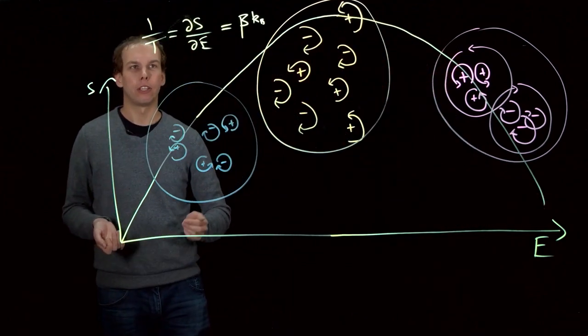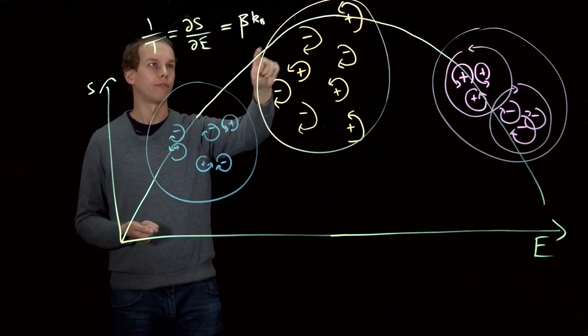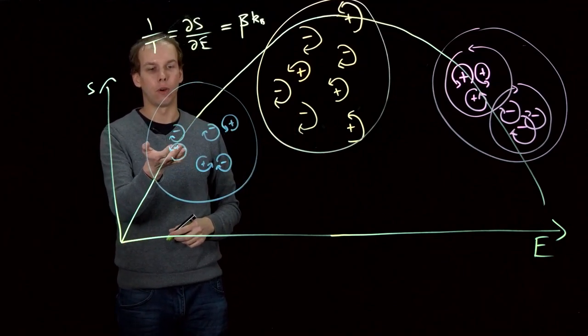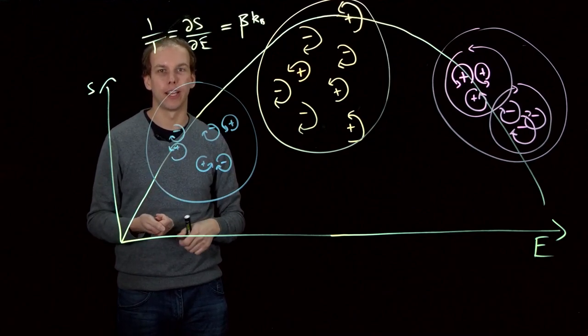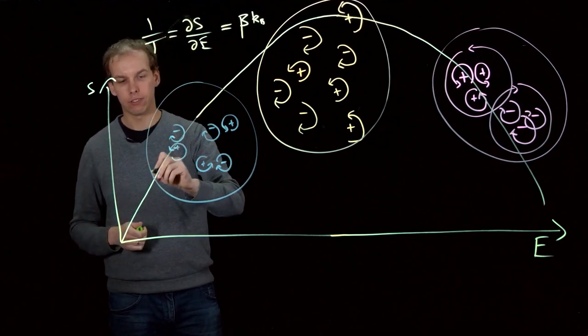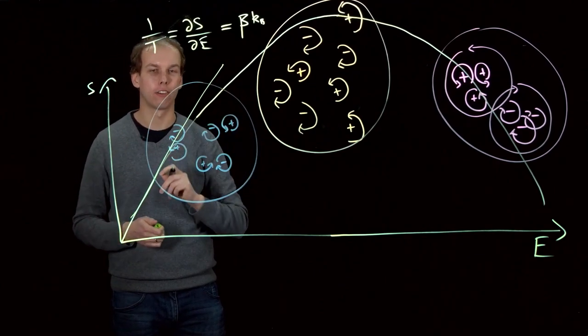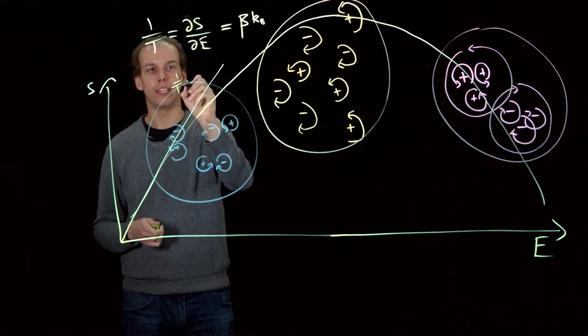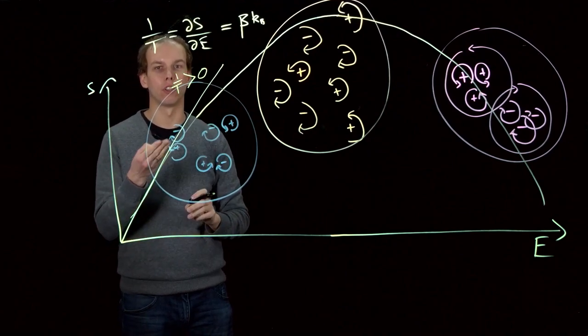If we return to our definition of temperature, which is the gradient of this entropy versus energy graph that I've drawn, then over here for these, what we would call dipole states, where each vortex is paired up with an anti-vortex, in this region, if we draw a tangent line on our graph, then that corresponds to 1/T and that is greater than zero. So here we have a positive value of temperature.